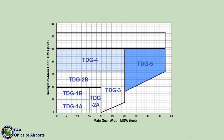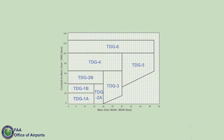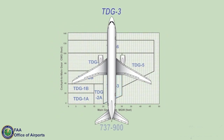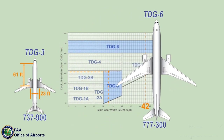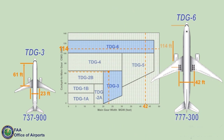There are six TDGs based on groupings of similar MGW, the x-axis of the graph, and CMG length, the y-axis of the graph. As examples, the 737-900 aircraft falls into TDG-3, while the 777-300 falls into the larger TDG-6 due to its wider MGW and longer CMG dimension.